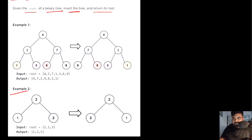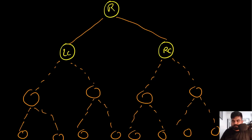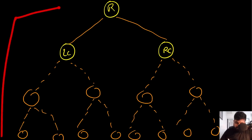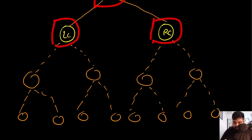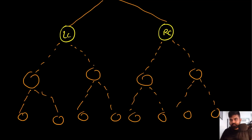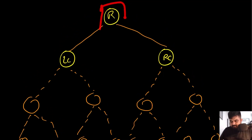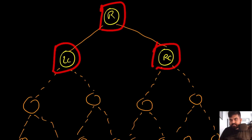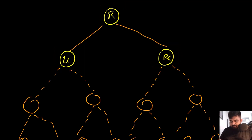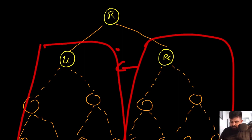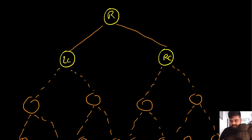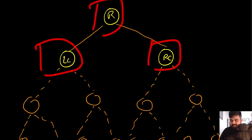Let's look at different approaches to solve this problem. Before the optimal solution, let's understand an important concept. Suppose we are given a binary tree with a root node, a left child, and a right child, and those children themselves have further children. At any given moment, if we want to invert the tree, all we have to do is swap the left child and the right child at the current root level. That takes care of the root level.